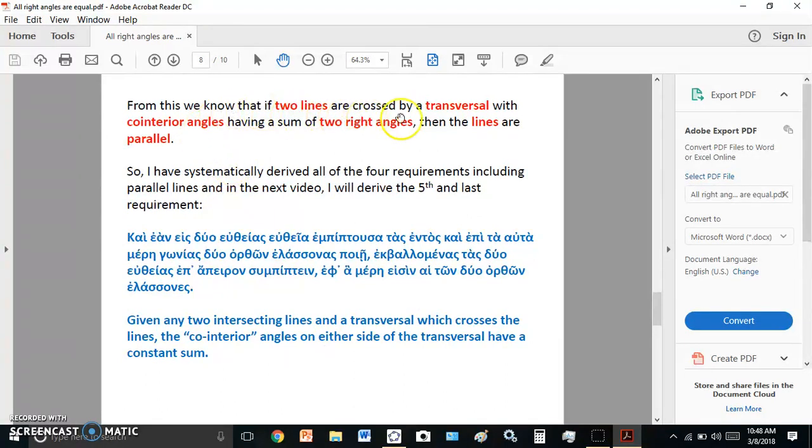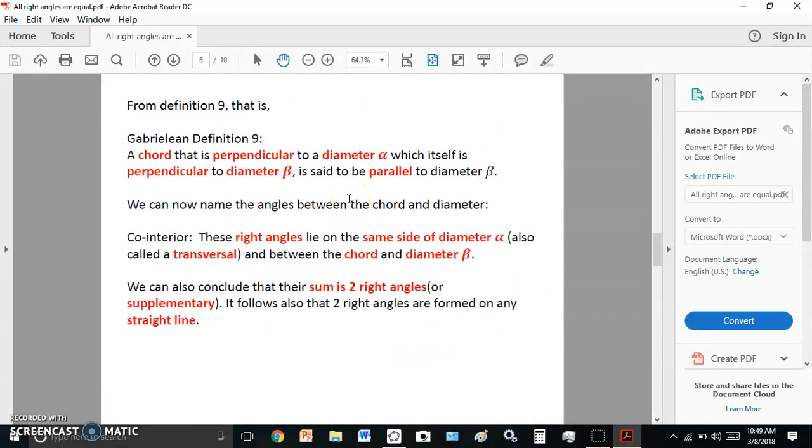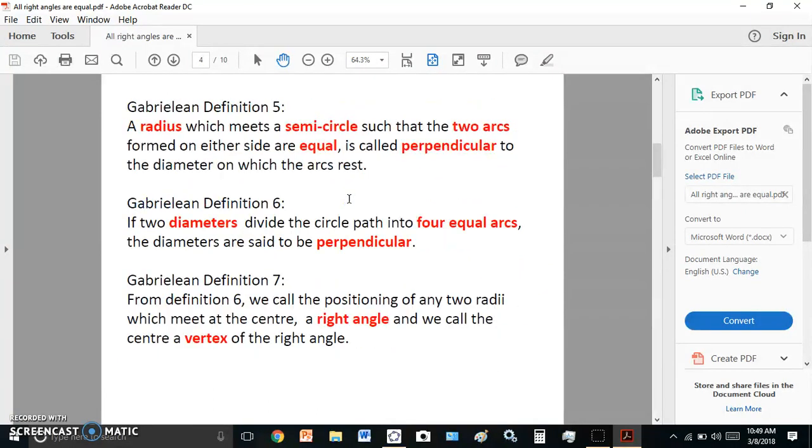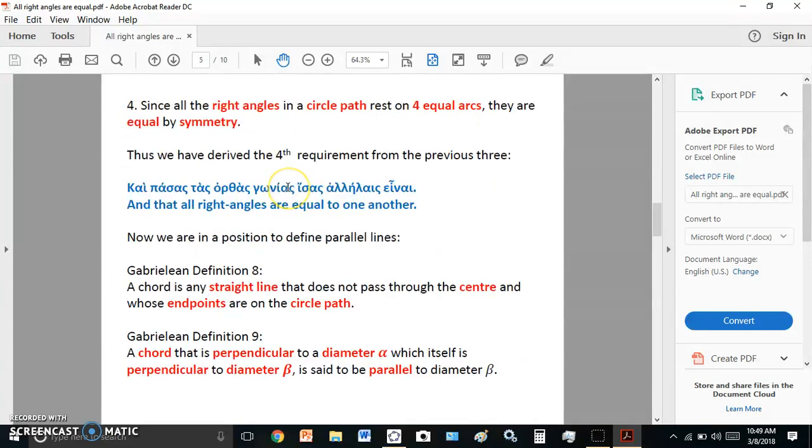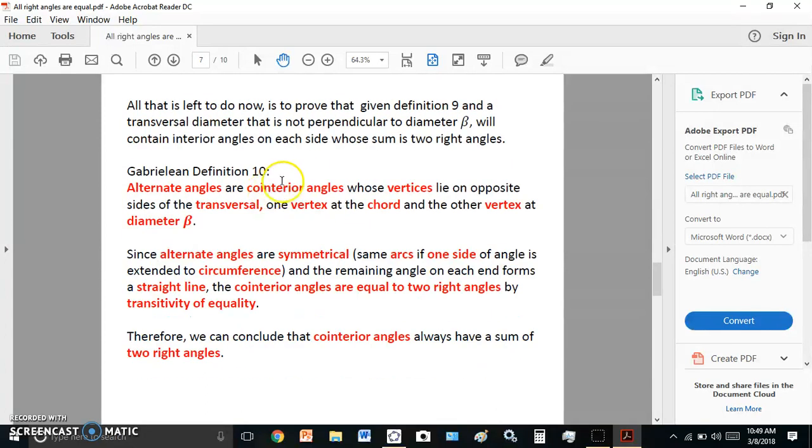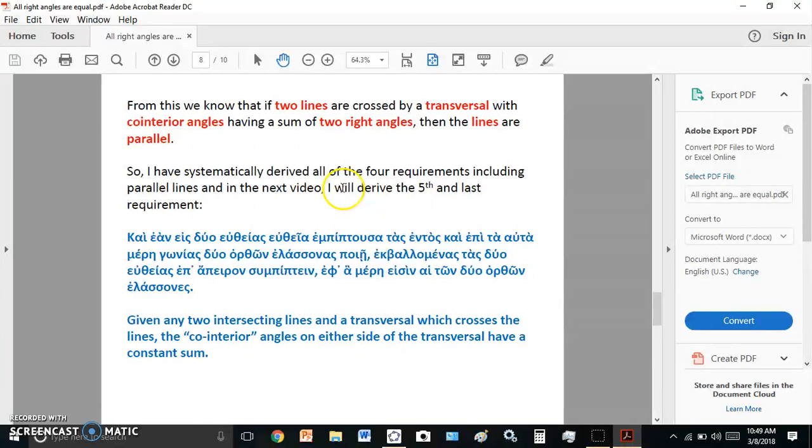So from this we know that if two lines are crossed by transversal, with cointerior angles having a sum of two right angles, then the lines are parallel. And so we finish the definition of parallel, but quite a bit of work is required to define parallel. We start from definition one all the way through to definition ten before we finally have the definition of parallel lines.